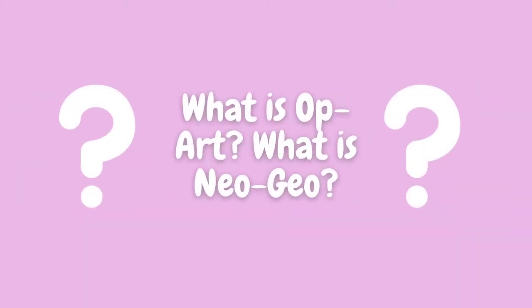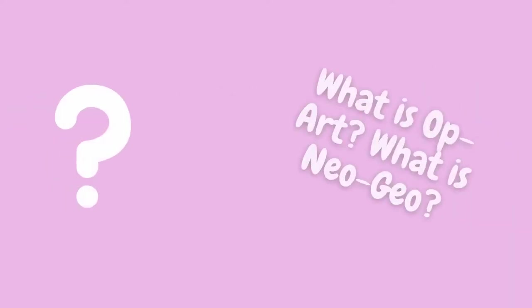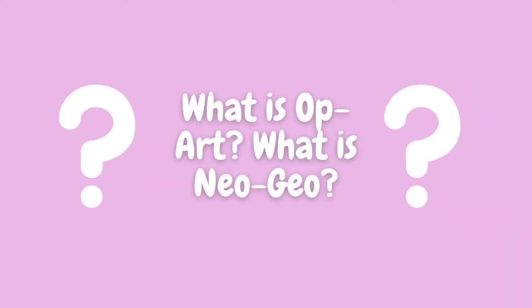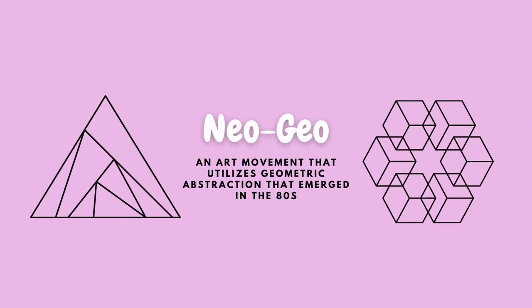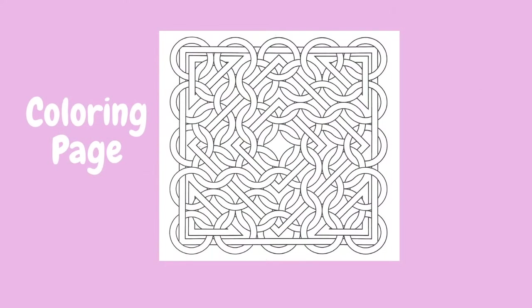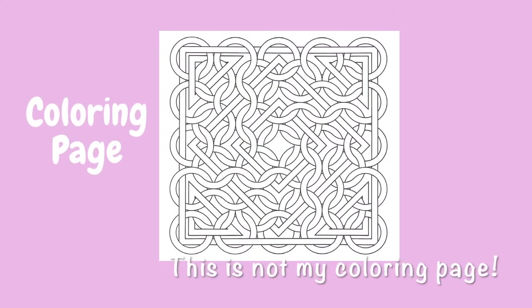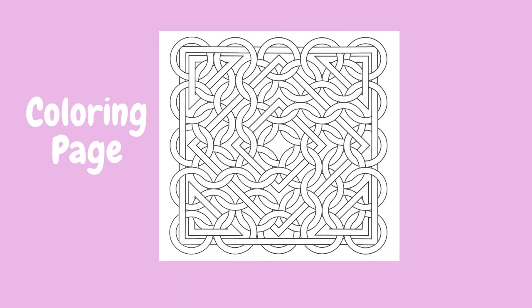Hey guys, welcome back to another video. Today we are going to be doing a color-with-me with op art and neo geo inspirations. Op art is a style of visual art that uses optical illusions, and neo geo is an art movement that utilizes geometric abstraction that emerged in the 80s. Here's the coloring page I will be using — you can follow along or create your own. The link is in the description.